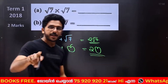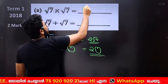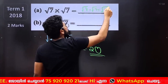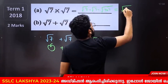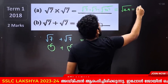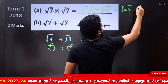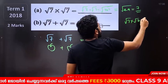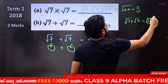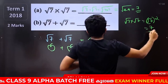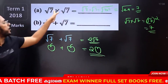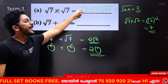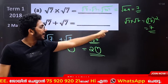Why do we run root 7 into root 7? You don't add root 7 into root 7 — you multiply them. The square of root 7 is root 7 into root 7, which equals 7. That is not addition. This is the multiplication of the square and root 7.